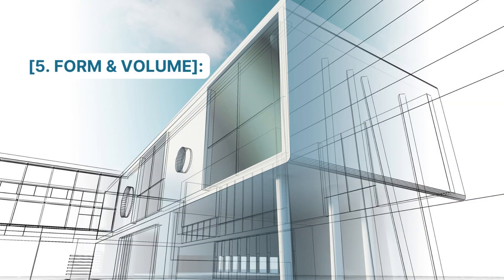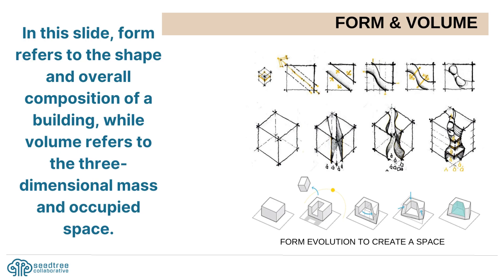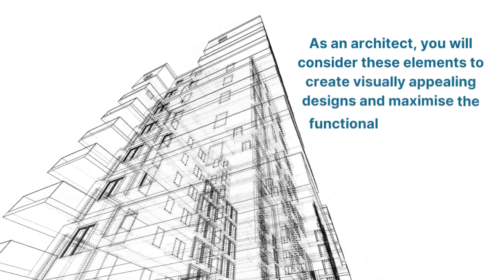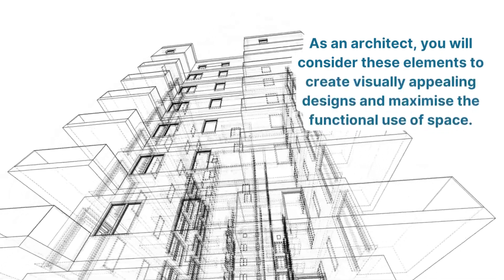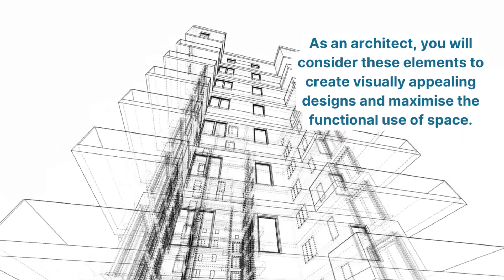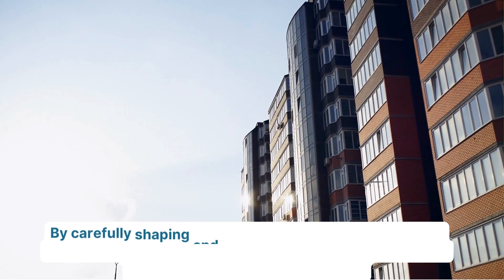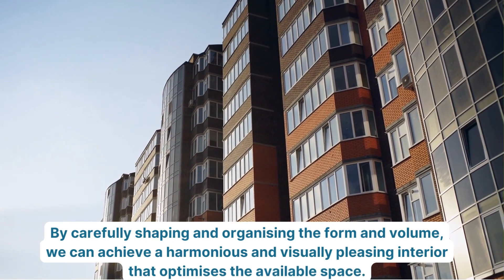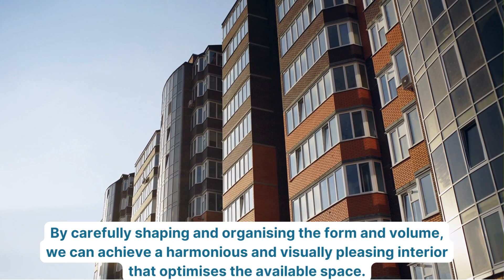Number 5: Form and Volume. In this slide, form refers to the shape and overall composition of a building, while volume refers to the three-dimensional mass and occupied space. As an architect, you will consider these elements to create visually appealing designs and maximize the functional use of space. By carefully shaping and organizing the form and volume, we can achieve a harmonious and visually pleasing interior that optimizes the available space.